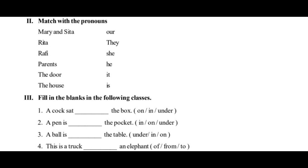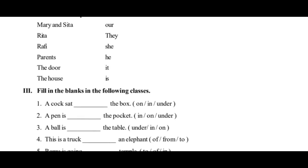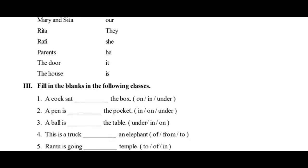Next: Rafi is a boy, so Rafi matches with the pronoun he. Next: Parents — the possessive pronoun is our. Our parents. Next: The door — it is a thing, so the pronoun is it. Next: The house is also a thing, so it also matches with the pronoun it.